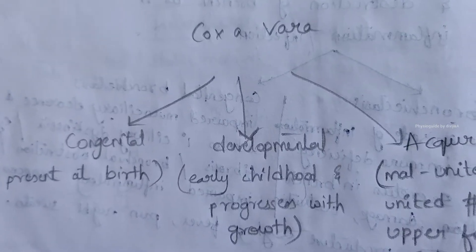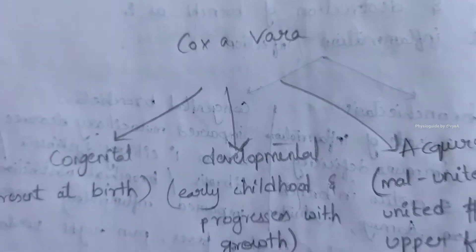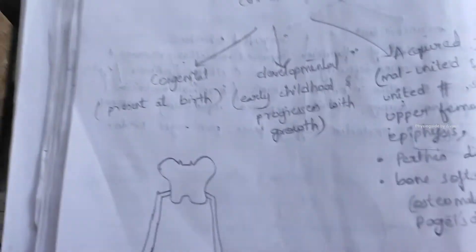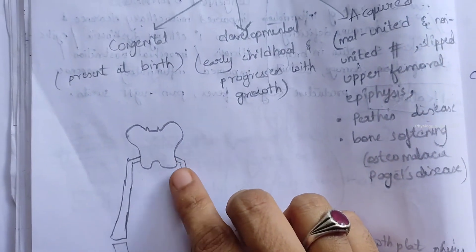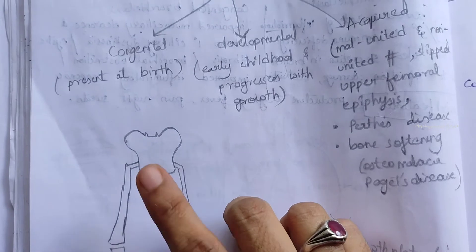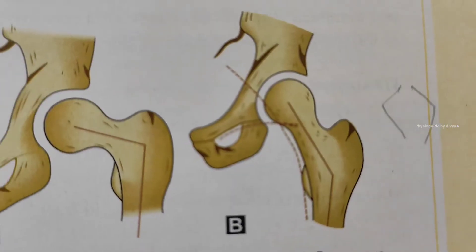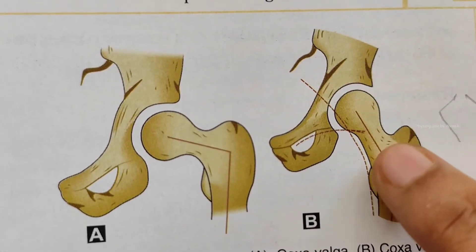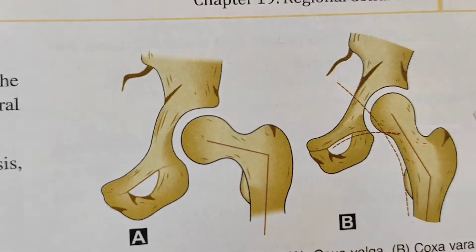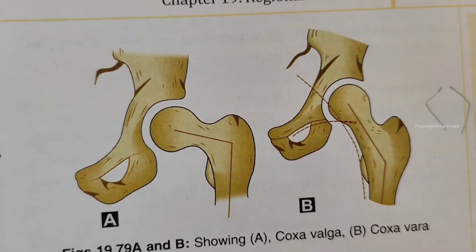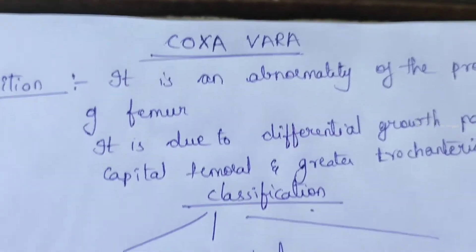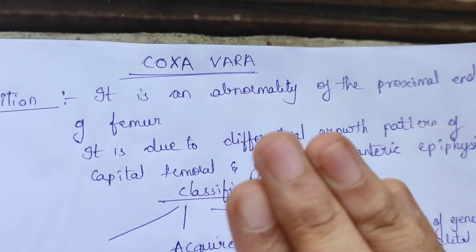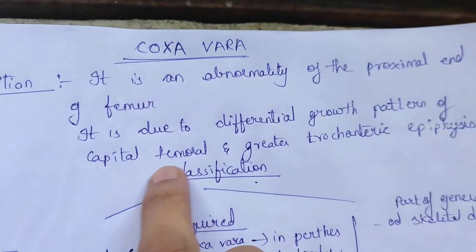Welcome to Physio Guide by Divya. Today we are going to see about coxa vara. It is an abnormality of the proximal end of the femur, characterized by a decreased neck-shaft angle. The normal angle is 125 to 132 degrees, and it is due to a differential growth pattern of the femoral capital epiphysis and the greater trochanteric epiphysis.